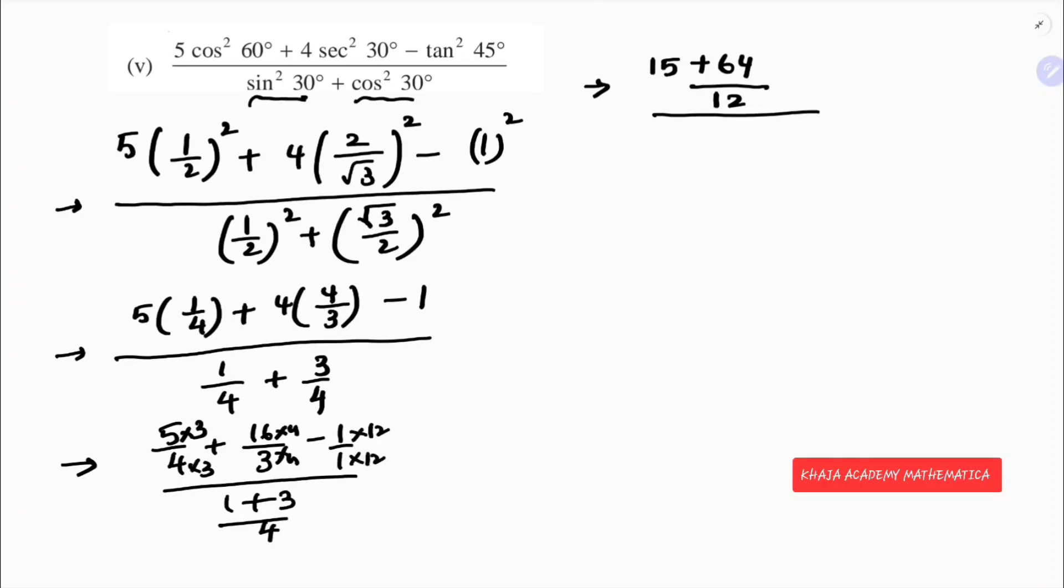By 4. So 4 and 4 cancel. Now 64, 15 minus 12 is 3, so 64 plus 3 is 67 by 12 over 4. So the answer is 67 by 12.